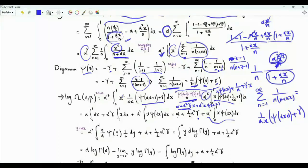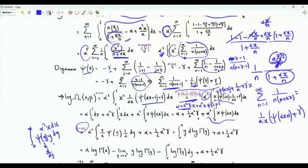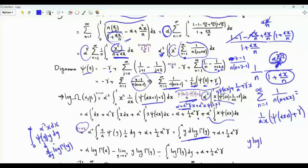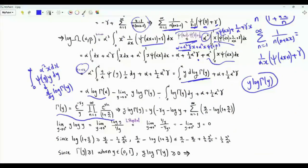Using the substitution y = αx, we get α² x dx = y dy, so the integral becomes ∫₀^α y·ψ(y) dy. Since ψ(y) = d/dy [log Γ(y)], we do integration by parts, obtaining [y·log Γ(y)]₀^α minus the integral ∫₀^α log Γ(y) dy. At y = α this gives α·log Γ(α). We need to evaluate the limit of y·log Γ(y) as y → 0⁺.